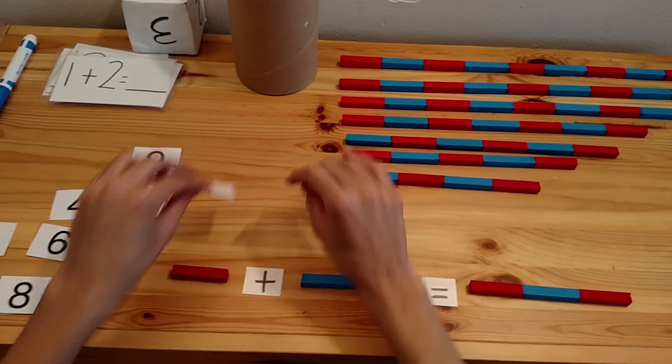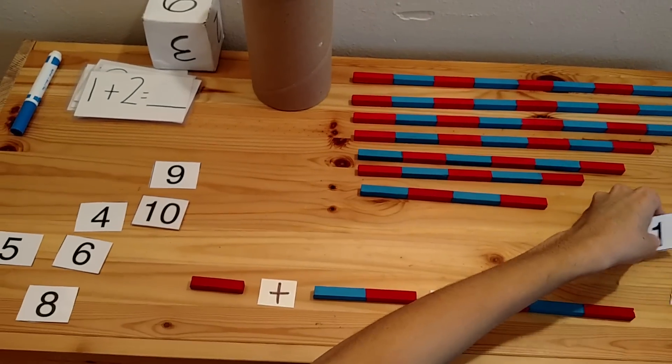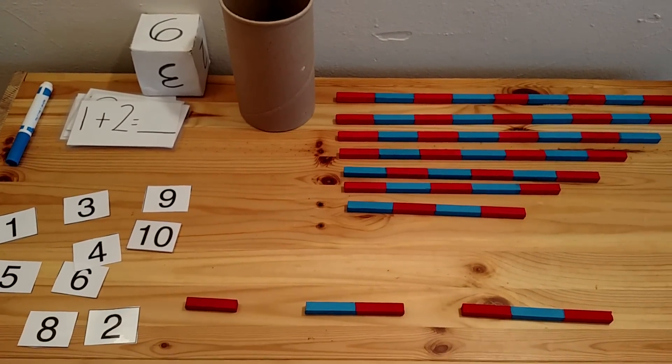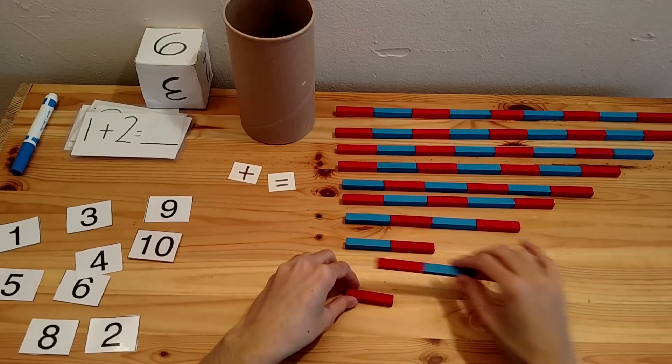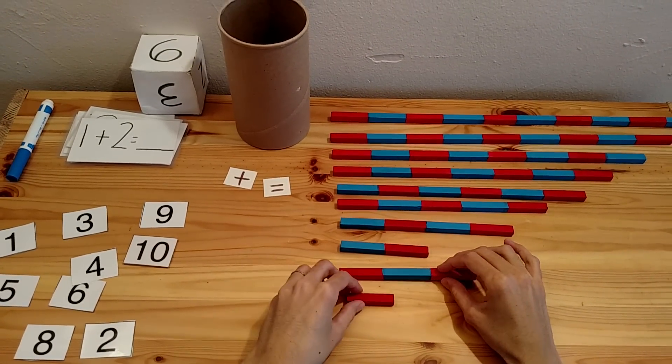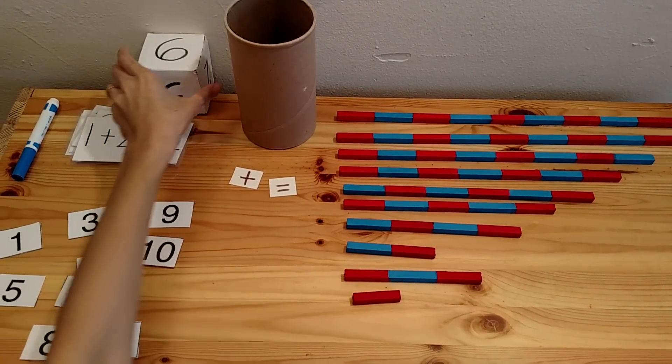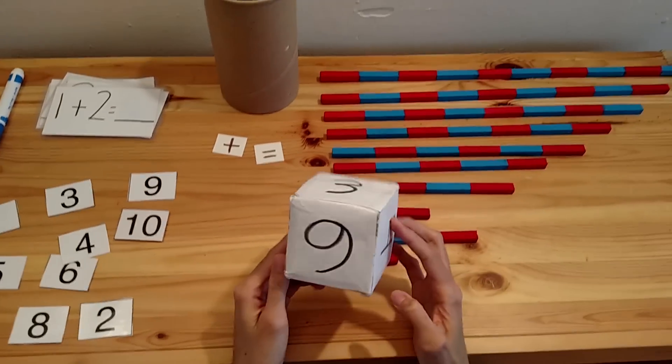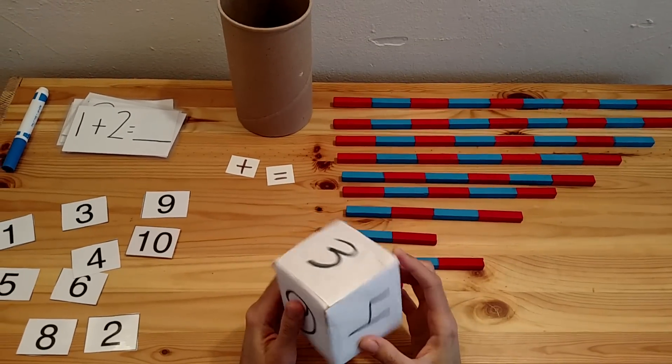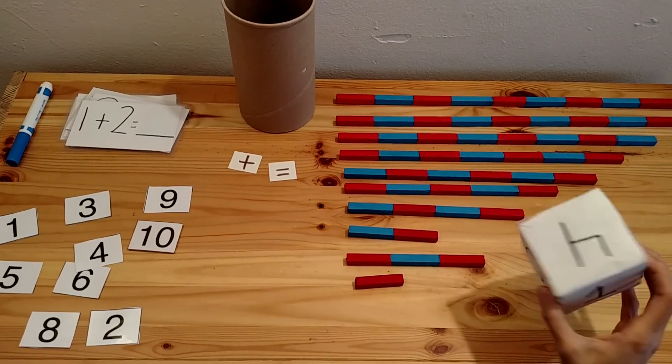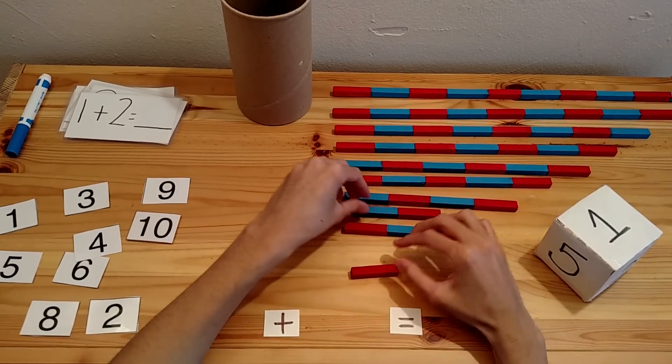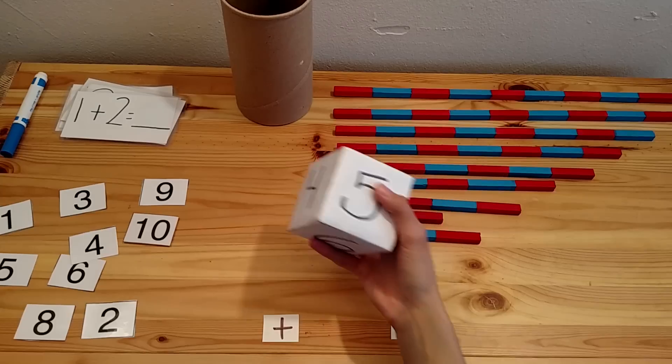If you want the child to work independently once you've taught them the basics of addition and you've done a couple of these problems and worked on it together for a period of time, you can move on to have them work independently with a die. I made this one out of a tissue box and construction paper and some tape, very simple. You can get one at the dollar store.